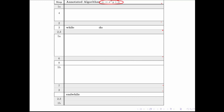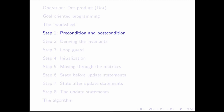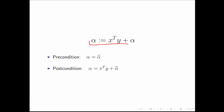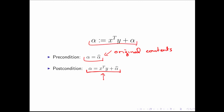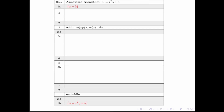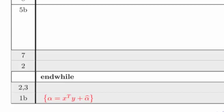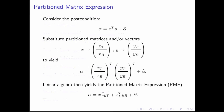The white boxes are going to be part of the algorithm. The first thing we do is say this is the operation that we wish to compute. Before we get started, alpha contains its original contents. When we're all done, alpha must contain the result of taking the dot product of x and y added to its original contents. So at the top we state that alpha contains its original contents, and at the bottom we state that alpha must contain x transpose y plus its original contents.